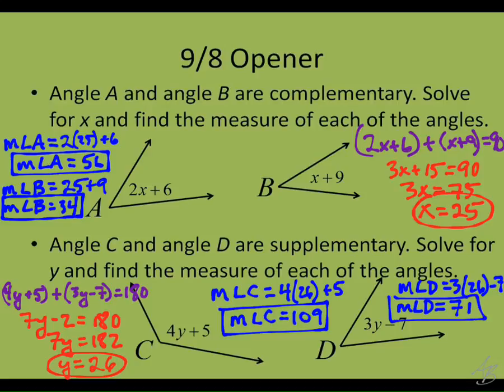Again, we could check for accuracy by adding those together — we should get 180. We do get 180. One thing to note about definitions: the definitions are biconditionals, so they tell us two things. We're only really using one of those things for these problems. The definition of complementary says two angles are complementary if and only if their sum is 90. Here we're told they're complementary, so we use that definition to say they add up to 90.